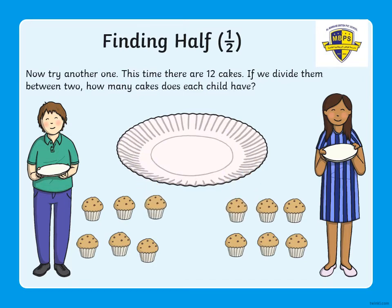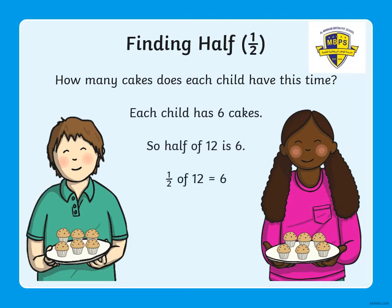Now let's go to the other example. How many cakes do you see here on the plate? Count — yes, there are twelve cakes on this plate. And how many people do you see? Yes, there are two people. We have to find the half of twelve. What is going to be the half of twelve? Yes, the half of twelve is six, and you can see in this picture that each child has got six cakes. So the half of twelve is six.